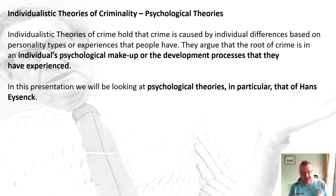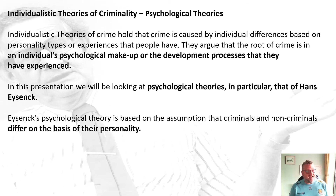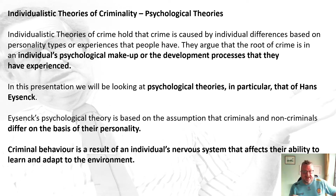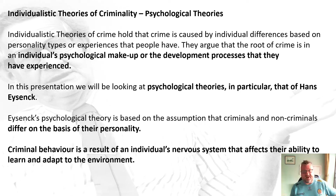We're going to look at Hans Eysenck in this presentation. His psychological theory is based on the assumption that criminals and non-criminals differ on the basis of their personality. It's rooted in personality, and Eysenck argues that criminal behaviour is a result of your nervous system affecting your ability to learn and adapt to the environment.